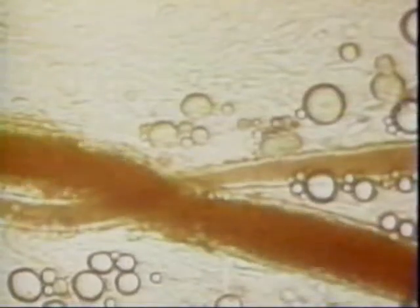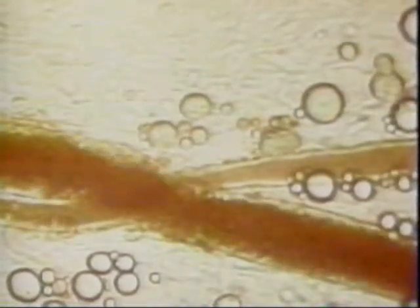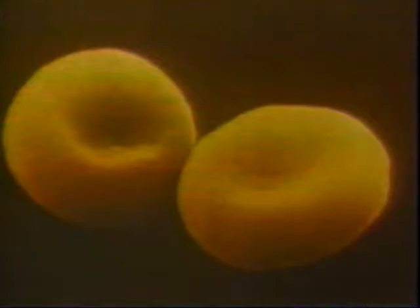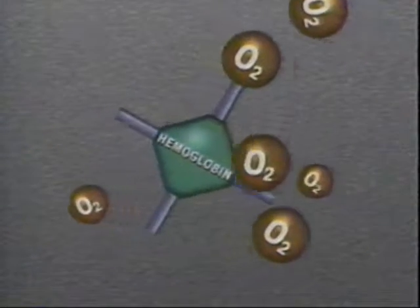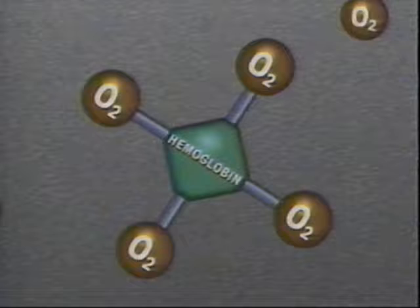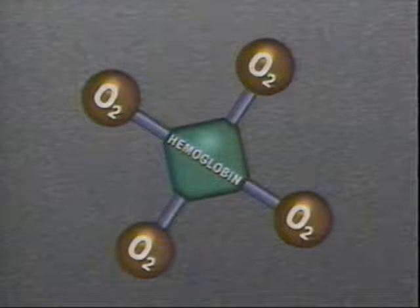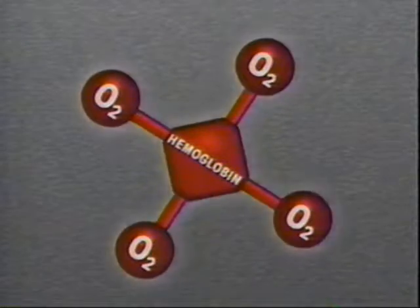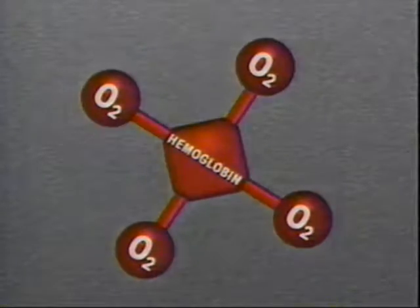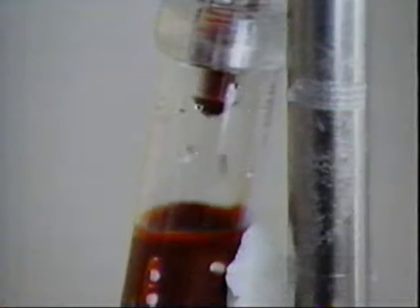Most of our blood is made up of cells called erythrocytes. These cells are special because they contain hemoglobin, a protein that contains iron. Hemoglobin's job is to pick up oxygen from the lungs and deliver it to all the tissues in the body. When hemoglobin comes into contact with oxygen, a chemical reaction takes place. The iron atoms in the hemoglobin bind to the oxygen atoms, producing a red pigment — and it's this red pigment that gives our blood its color.